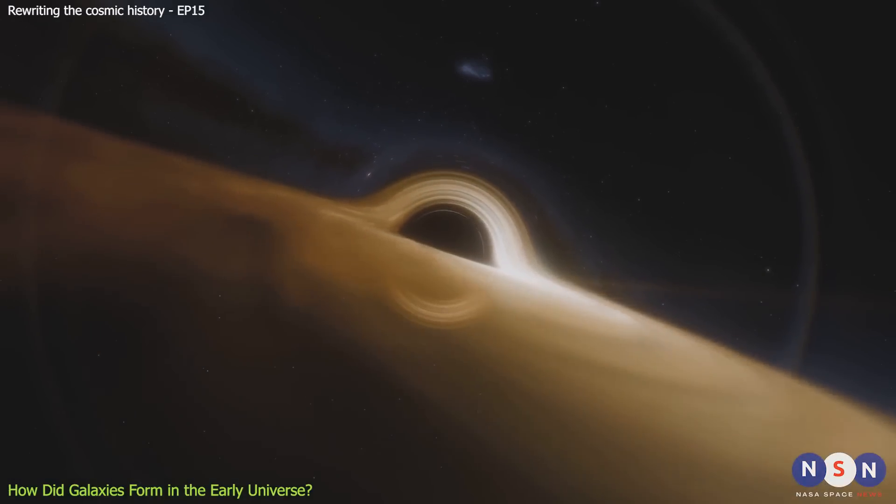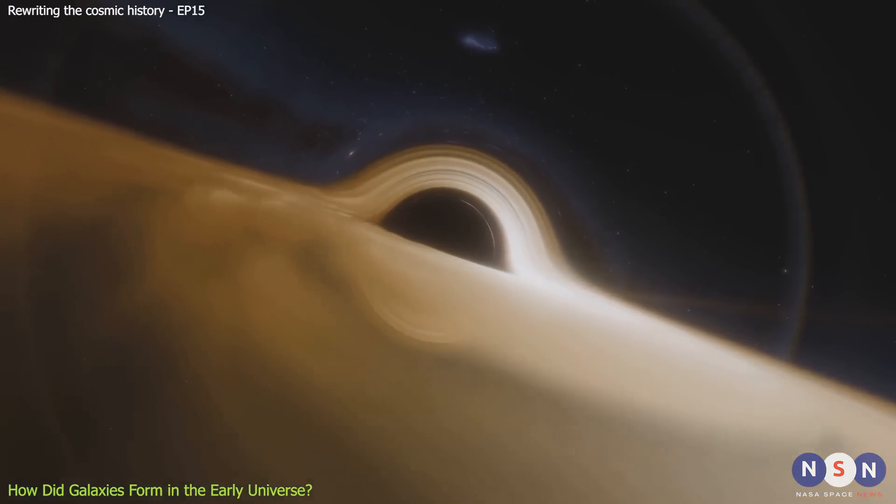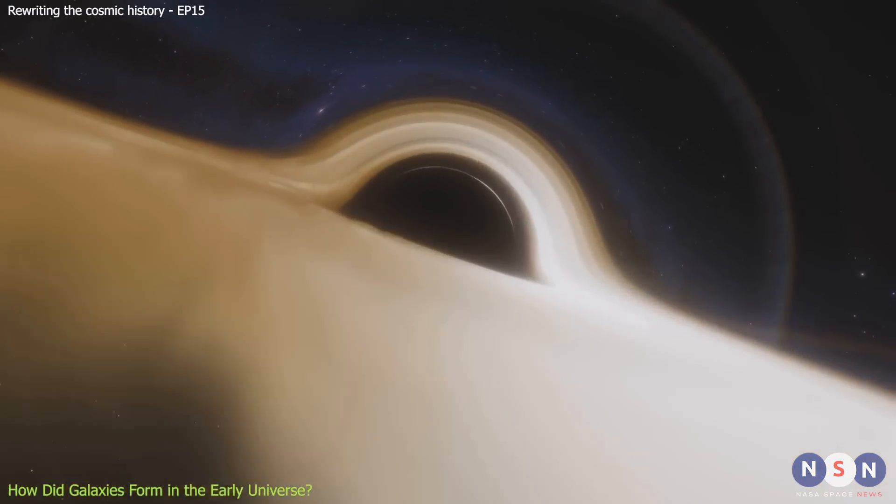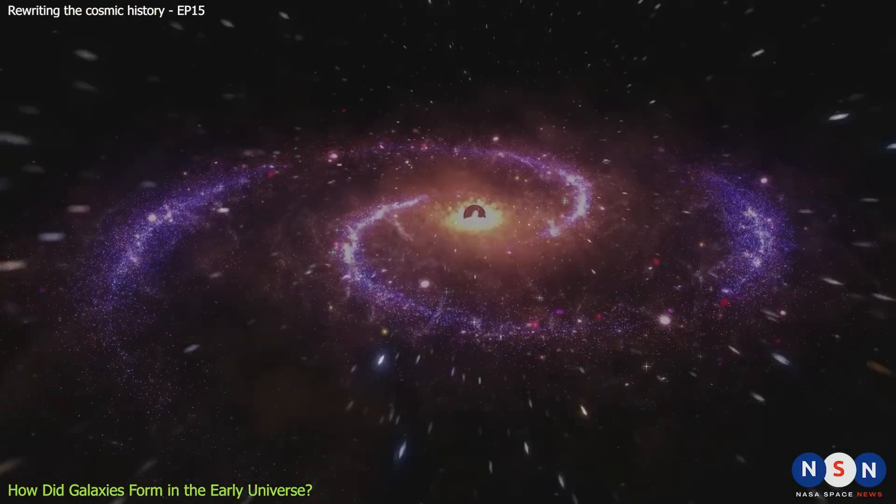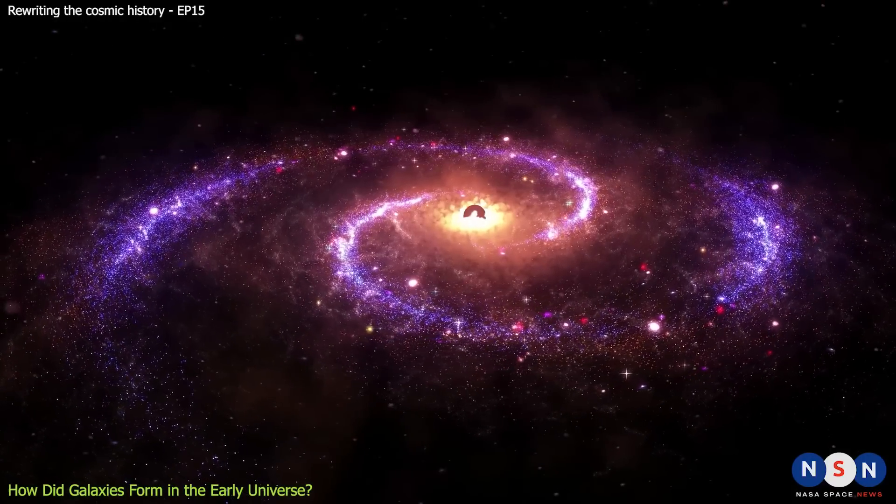Eventually, some of them became supermassive, with masses of millions or billions of suns. These supermassive black holes are usually found at the centers of galaxies, where they influence their evolution and shape their structure.